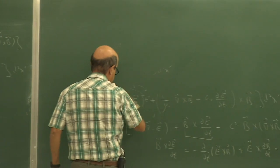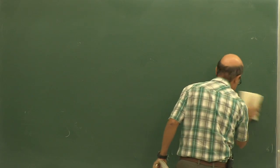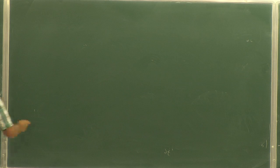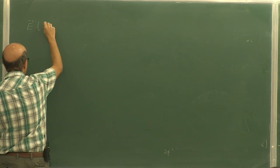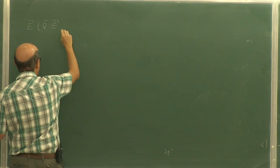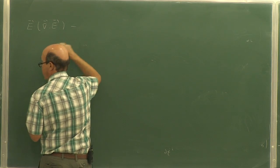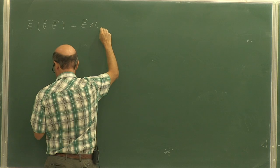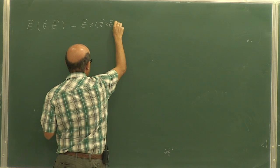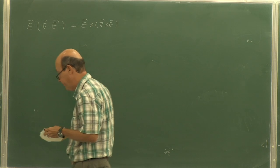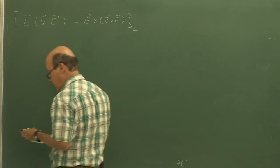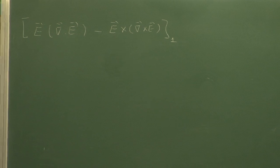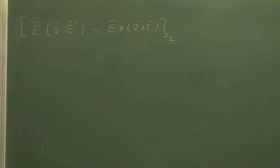Let us work on the two terms with the electric fields. One term is E times the divergence of E, and the other term is minus E cross curl of E. I want to put this in a convenient form, so let me consider the x-component — x, y, z, that is 1, 2, 3.